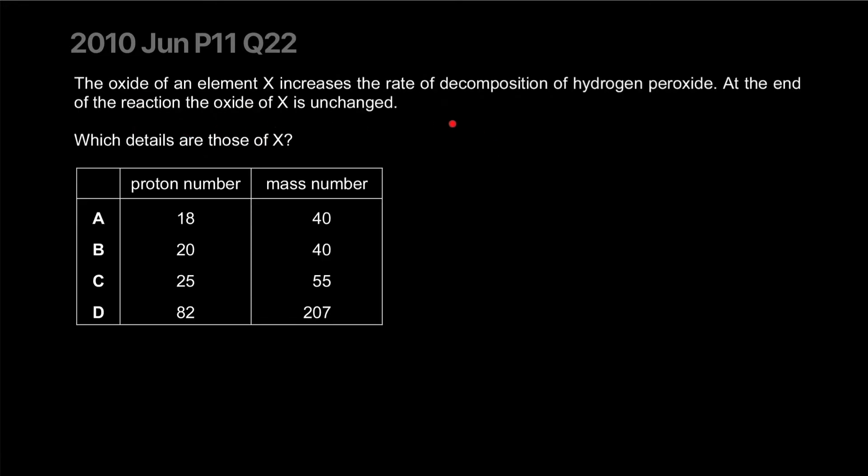The oxide of an element X increases the rate of decomposition of hydrogen peroxide. At the end of the reaction the oxide of X is unchanged. So X has to be a transition element - we have to match the proton number to the periodic table and figure it out.